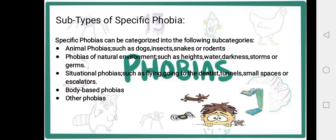What are the subtypes of specific phobia? There are many subtypes, but here are a few: animal phobias, phobias of the natural environment, situational phobias, body-based phobias, and other phobias. Natural environment phobias include fear of heights, water, tunnels, and escalators. In situational phobias, for example, people avoid doctors because they fear getting an injection, or avoid planes and small spaces.